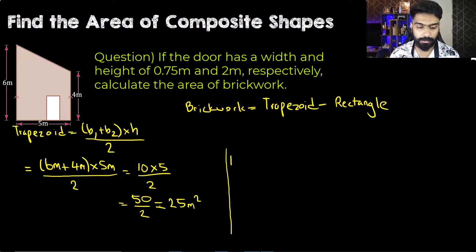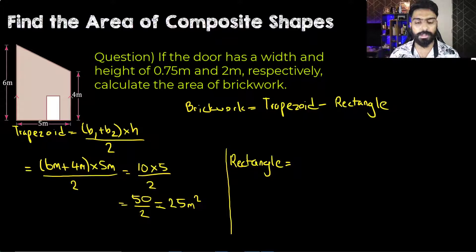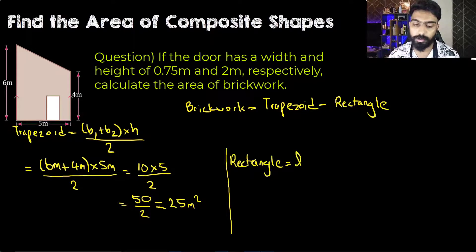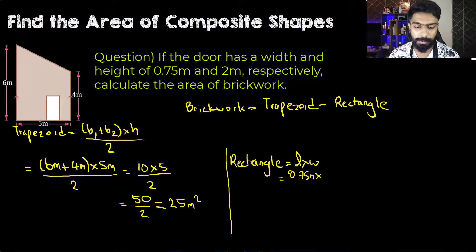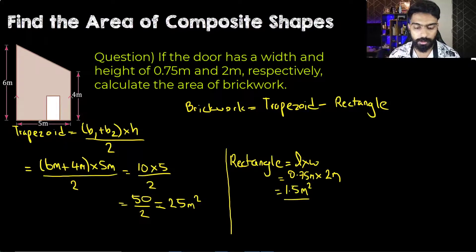Now let's find the area of the rectangle. We take the length multiplied by its width. The length in this case is 0.75 meters, multiplied by the width of 2 meters, which equals 1.5 meter squared. So the area of the door is 1.5 meter squared.